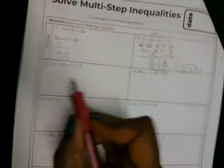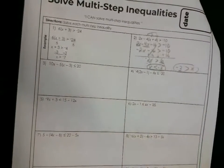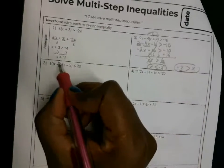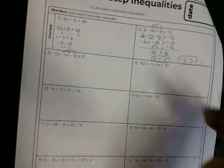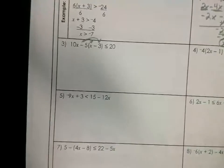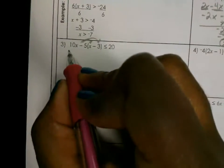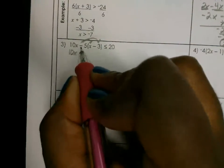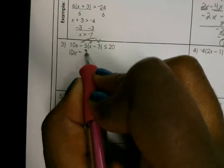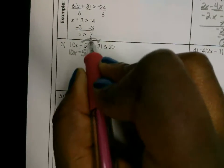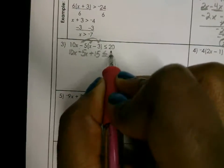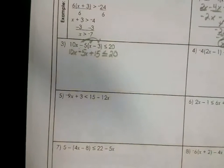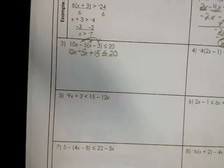Let's look at number 3. We're going to do the same thing again. Distributive property is first — we're going to distribute, which means multiply negative 5 times both terms in the parentheses. When we do that, we'll zoom in just a little bit. We bring down the 10x. Negative 5 times x is negative 5x. Negative 5 times a negative 3 is a positive 15. Bring down the less than or equal to inequality. Bring down the 20.